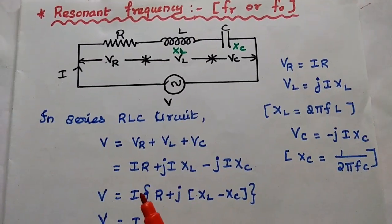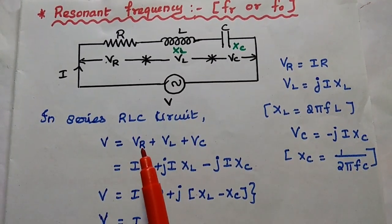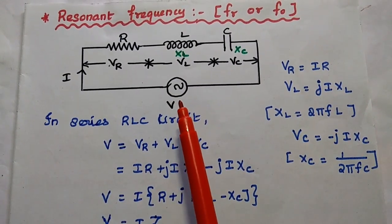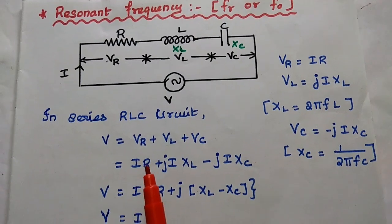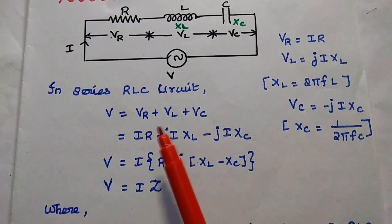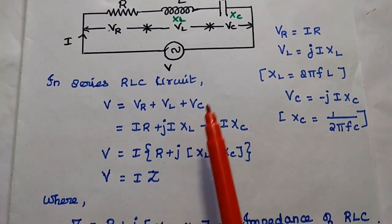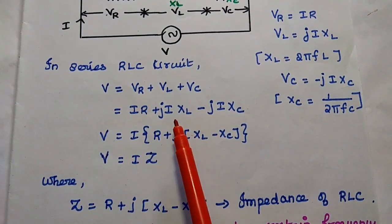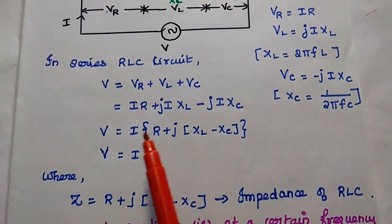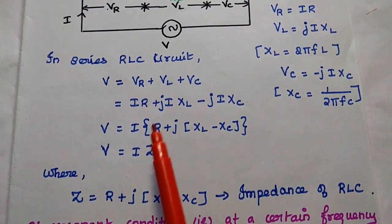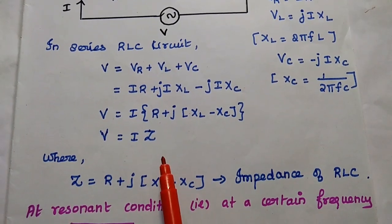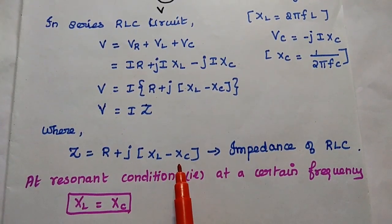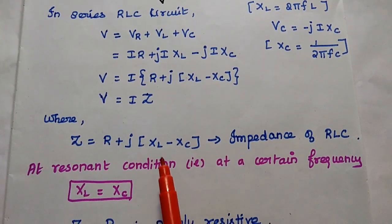According to Ohm's law, VR = IR, VL = jIXL, and VC = −jIXC. XL is the inductive reactance equal to 2πFL, which is directly proportional to frequency. XC equals 1/(2πFC), so capacitive reactance is inversely proportional to frequency. Using Kirchhoff's voltage law — voltage rise equals the sum of voltage drops — the input voltage equals VR + VL + VC, which gives V = I(R + j(XL − XC)). This term is the impedance Z = R + j(XL − XC).